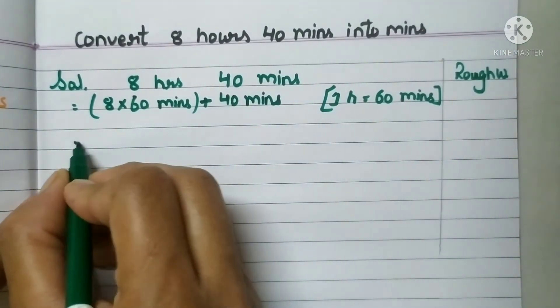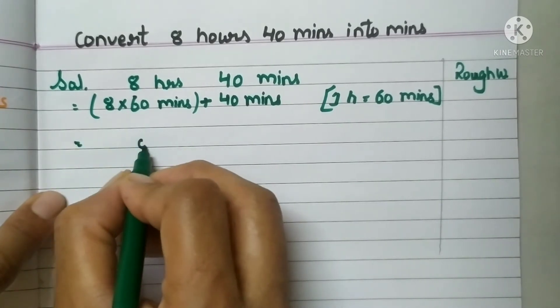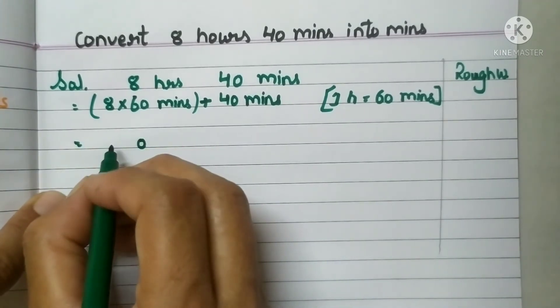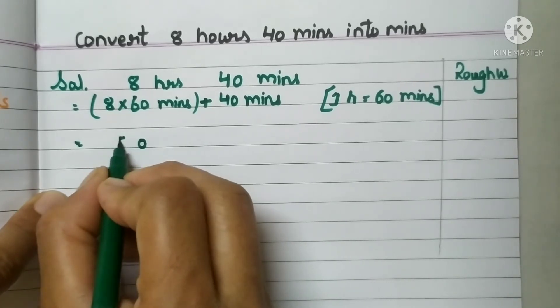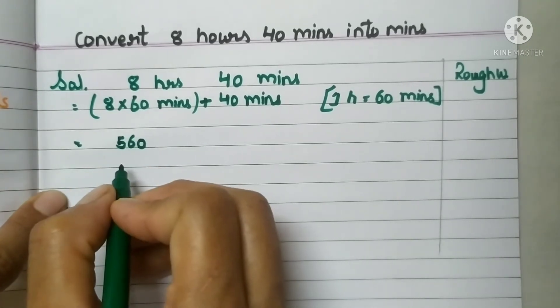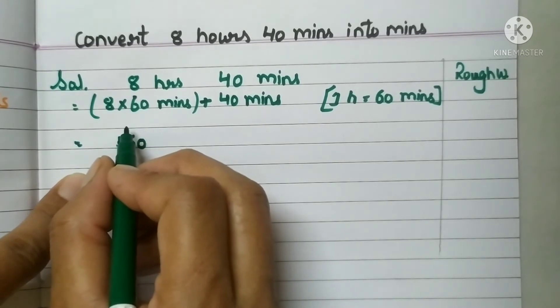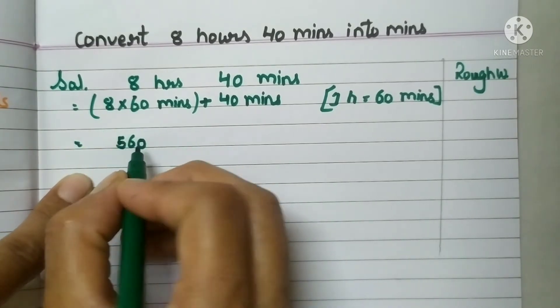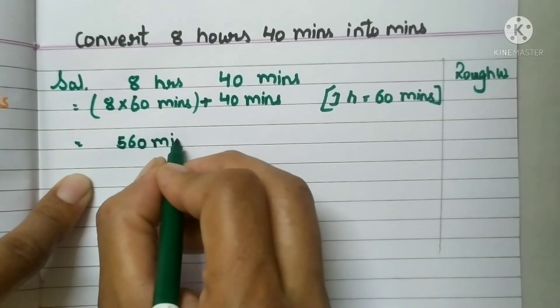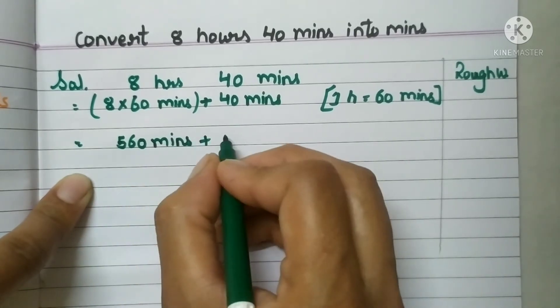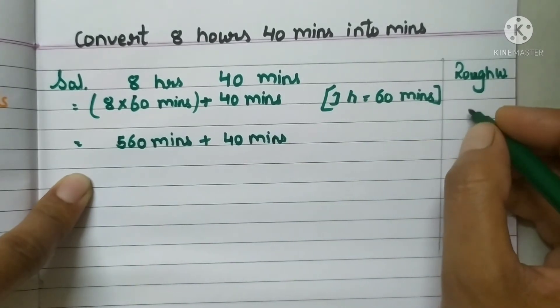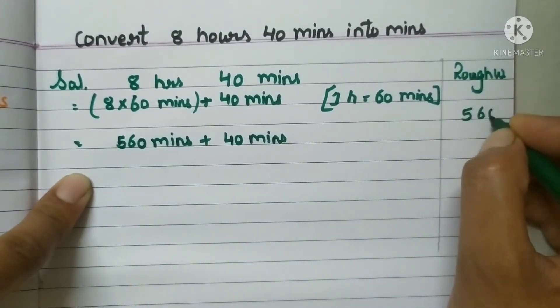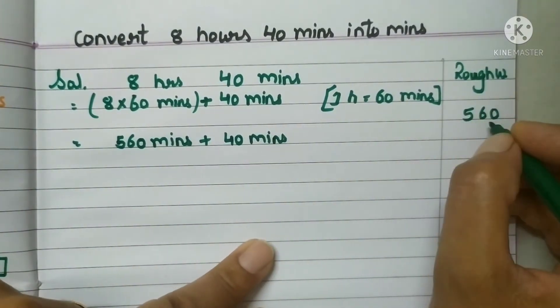Now it's very easy. 8 zeros are 0, 8 sixes are 48, so the answer is 480 minutes. Then I have to add 40 in it. This we can do in rough. Let me check, 480, but the calculation shows 560. Don't forget to put in a proper order.